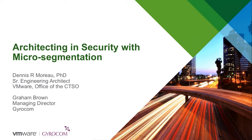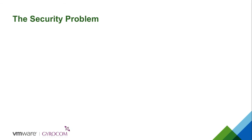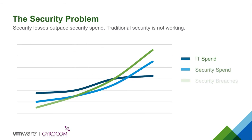Let's first consider the security problem we're seeing today. We're seeing relatively flat spending on IT, with increasing spending in security as a fraction of overall IT spending — while at exactly the same time we're seeing record numbers of security breaches and record losses due to those breaches. This is the formula for indicating that security as we're doing it today is not working.